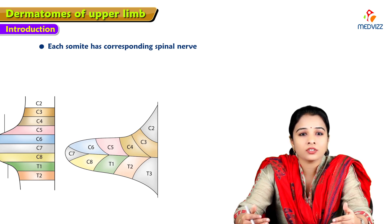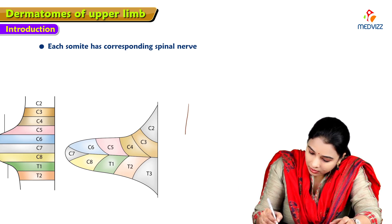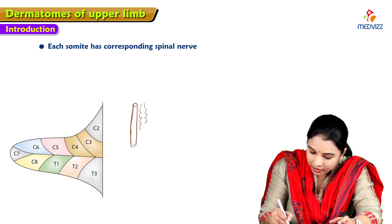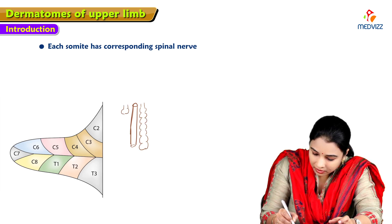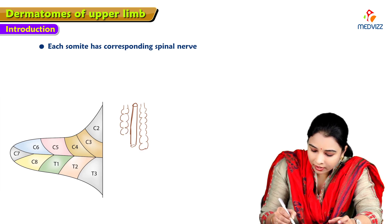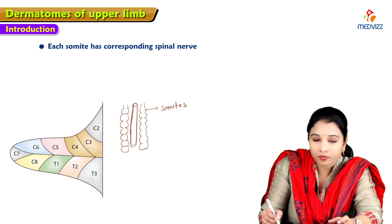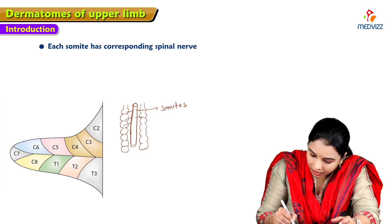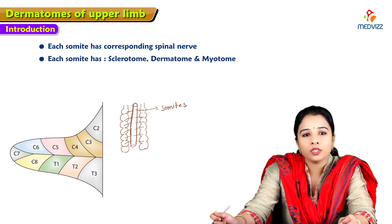Developmentally, during the somitic period, each somite has a corresponding spinal nerve. From the superior view, on each side of the neural tube, the paraxial mesoderm gives rise to a segmented appearance — bulgings present on either side of the developing neural tube called somites. The spinal nerves arising from the neural tube go to their corresponding somites on either side. Each somite has a sclerotome, dermatome, and myotome.